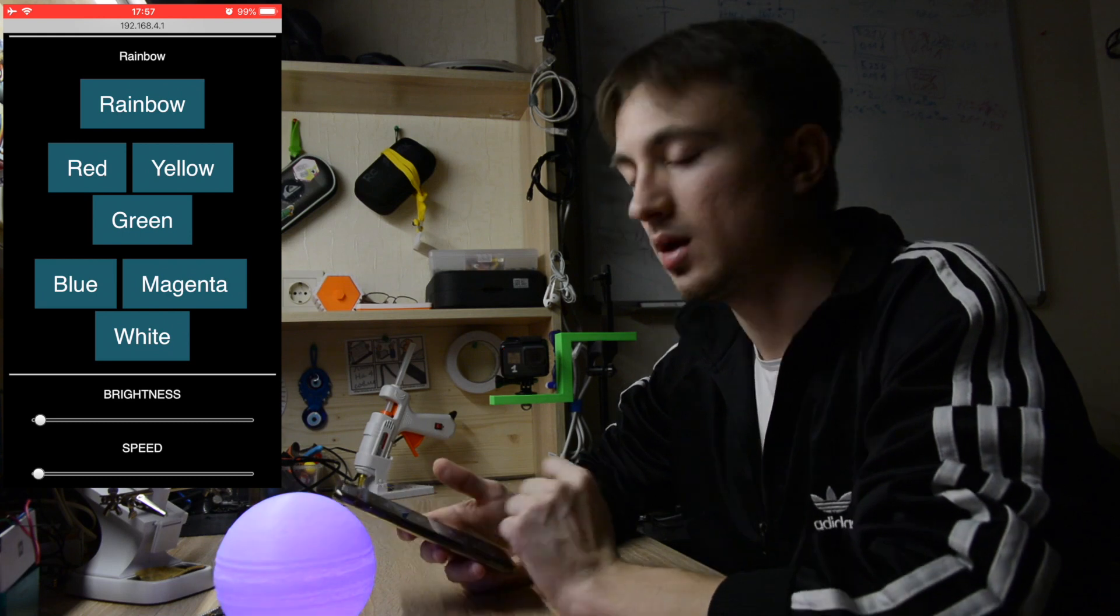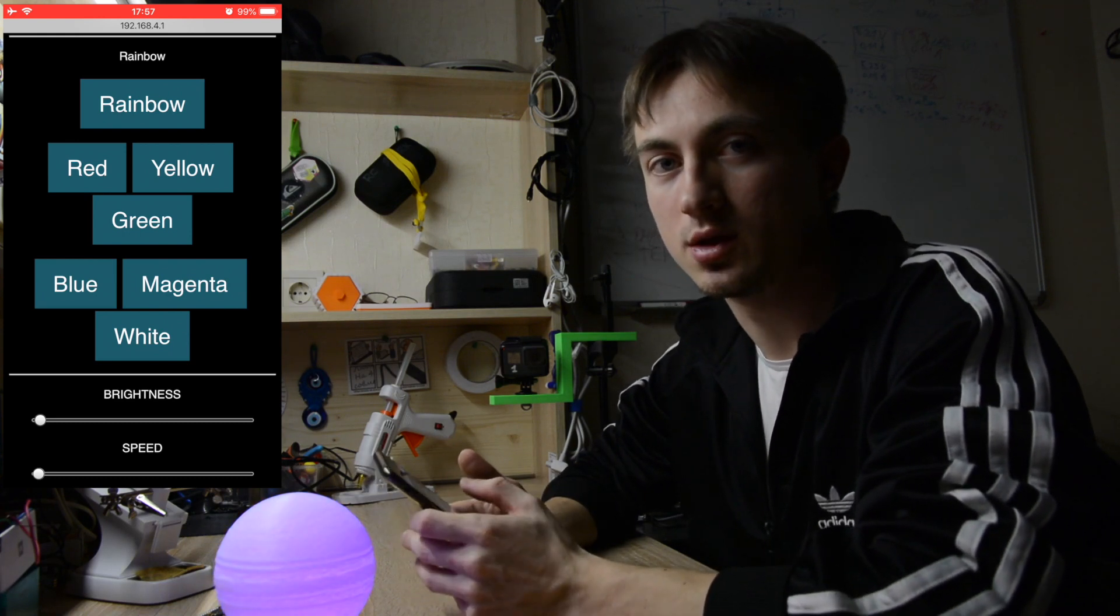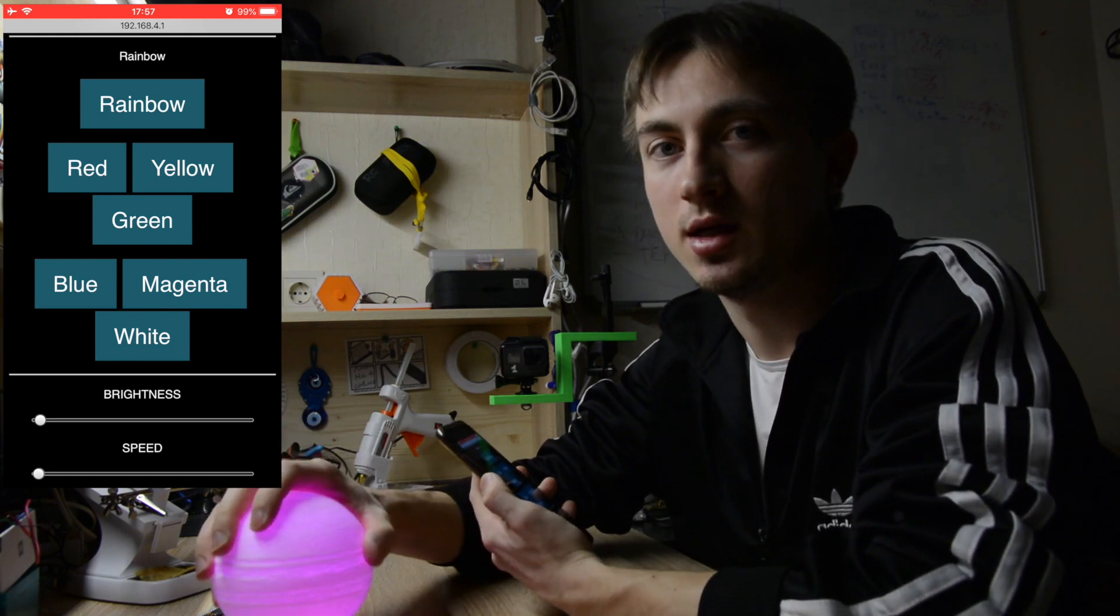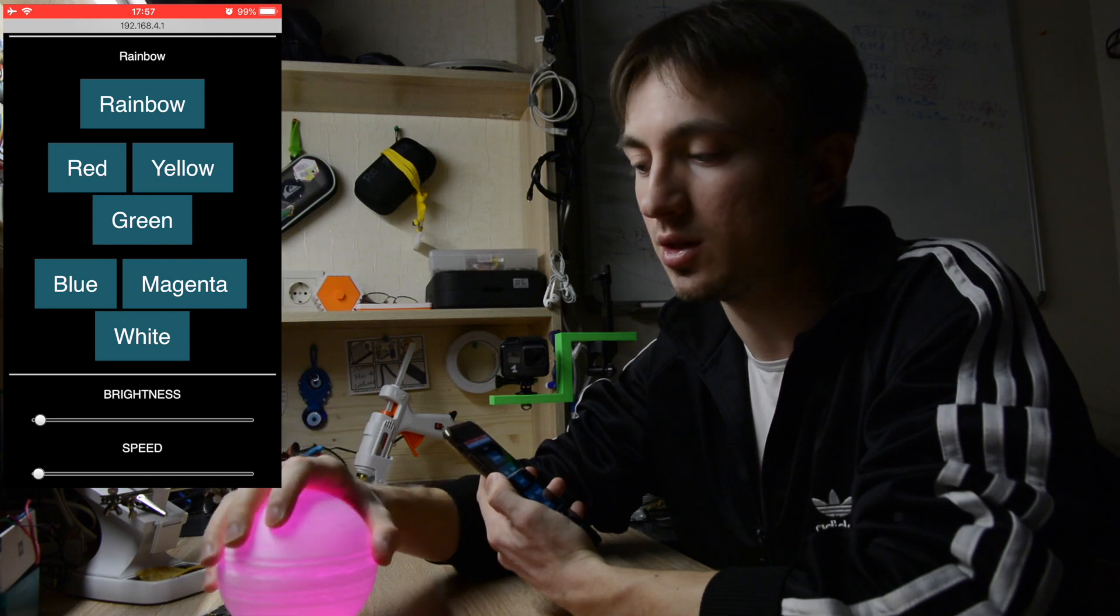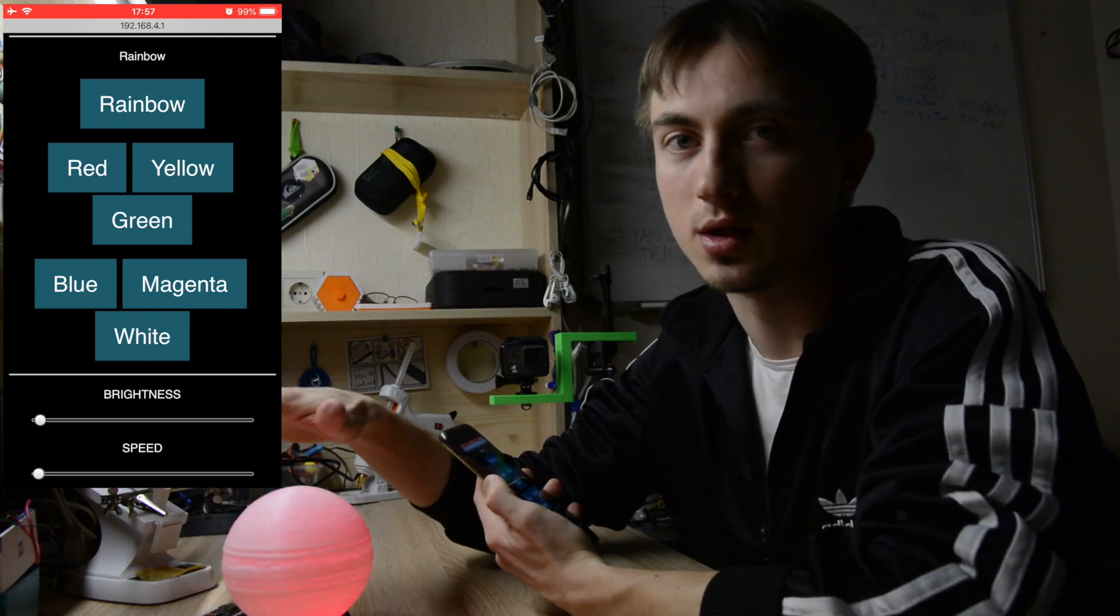yellow, green, magenta, and so on. And there is one animation called rainbow which is running now on this lamp. You can see the transition between pink to red and so on.